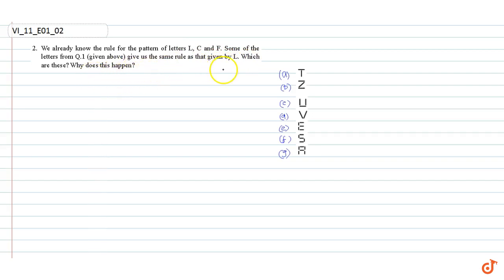We know that L requires only two matchsticks. So the rule for L is 2N where N is a variable.